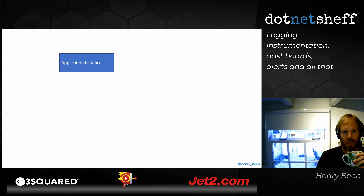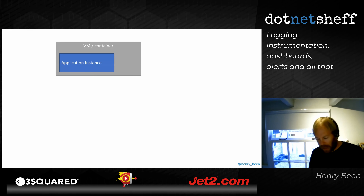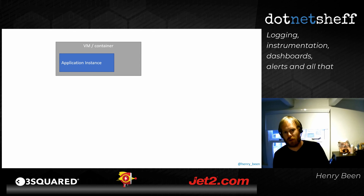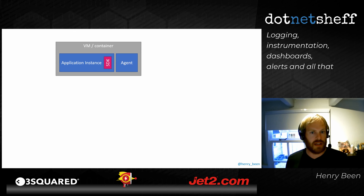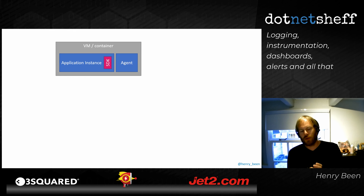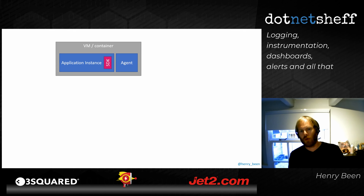How does this work? Your application code is running on something — a virtual machine, a container, or a serverless function host. To collect information, you can install an SDK in your application code, but that only collects information you send to it yourself. There's also a lot happening below your application — CPU load, network traffic, disk space. To collect that, you install a separate agent on the application host next to the SDK.